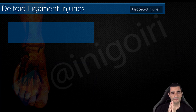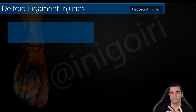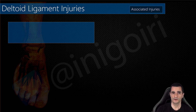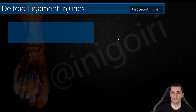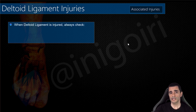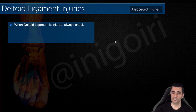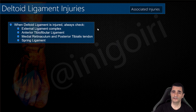So, you can find injuries of the deep layer — the posterior tibiotalar and anterior tibiotalar components — and of the superficial layer — the tibiocalcaneal, tibiospring, and tibionavicular components. All six components may be affected and can be assessed very accurately with ultrasound. When we detect an injury of the deltoid ligament, we must also check the external ligament, anterior talofibular ligament, anterior tibiofibular ligament, medial retinaculum, posterior tibialis tendon, and the spring ligament — all these structures must be assessed.